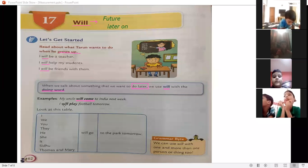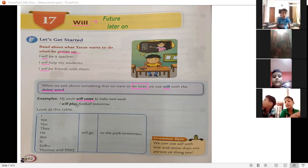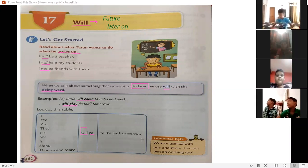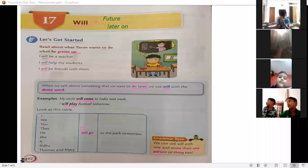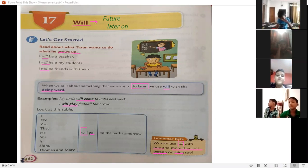Main kal futbol kehlungi. I will play futbol tomorrow. Will play. Hum koji bhi word likhenge: I, we, you, they, he, she, it, koji bhi name, one name or two name, three names, anything. Hum sab ke saath, beta will use karenge aur doing word add karenge. Doing word se pehle, we will add will. See, I will go to the park tomorrow. We will go to the park tomorrow. Agar haam one person ki baat kar rahe ya one se zaadha ki baat kar rahe hai, chahe haam kisi person ki baat kar rahe ya kisi thing ki baat kar rahe hai, we always use will. I hope it is clear.